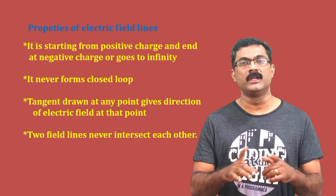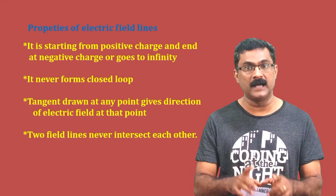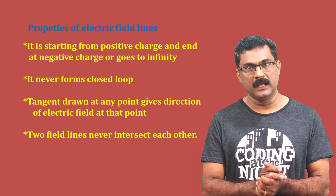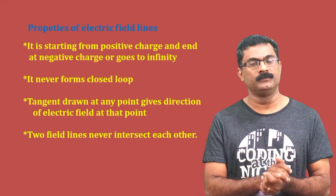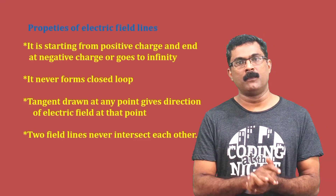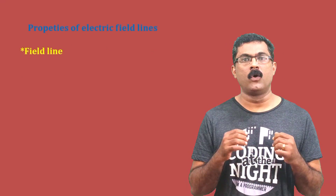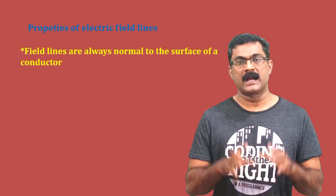The fifth property is: electric field lines are always normal (perpendicular) to the surface of a conductor. The field lines meet the conductor's surface at a right angle.